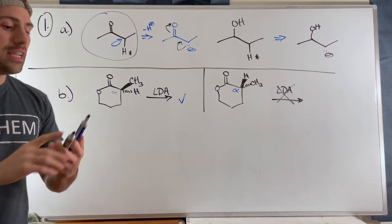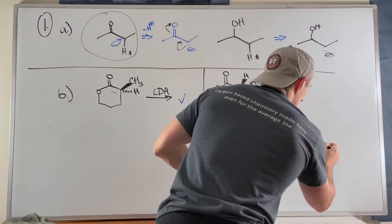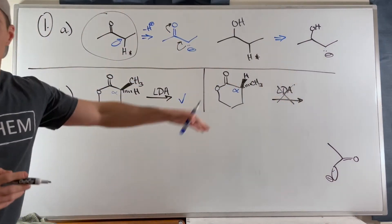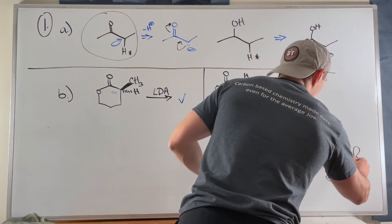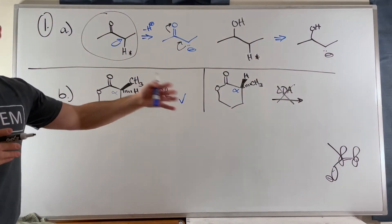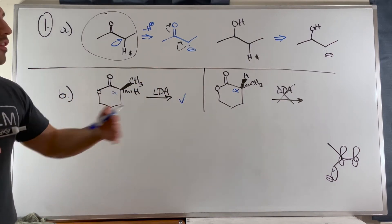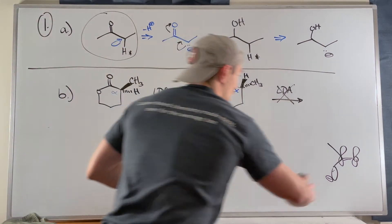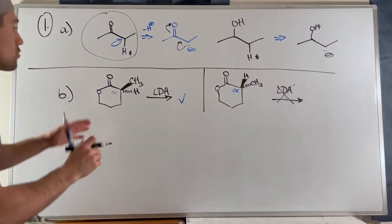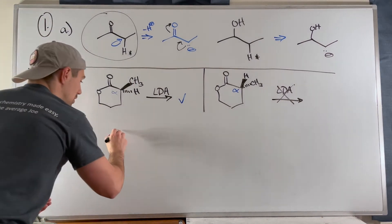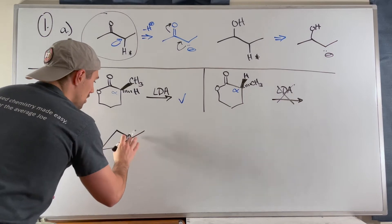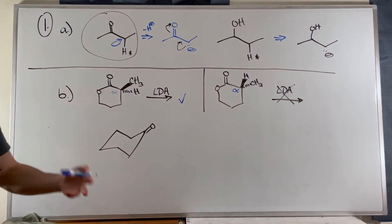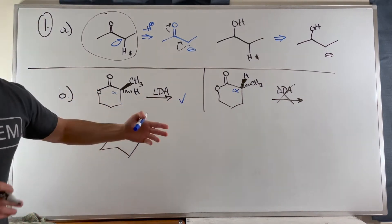We sometimes take for granted one key condition of alpha deprotonation: the protons at the alpha position that get deprotonated need to end up being parallel to the p orbitals of the carbonyl carbon and carbonyl oxygen — it sets up that three-atom conjugated system. So we need to draw these chairs. The carbonyl is sp2, so there's no real axial and equatorial there — it just juts straight off wherever you draw it.